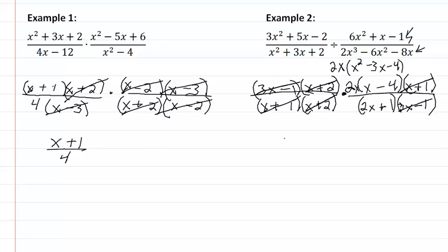So what that means then, that for my answer is I have 2x times x minus 4 all over 2x plus 1. And I'm done.